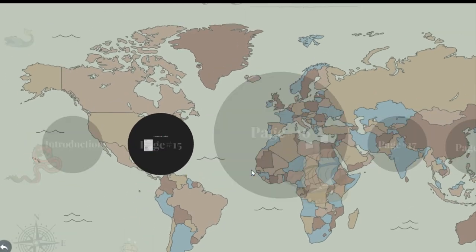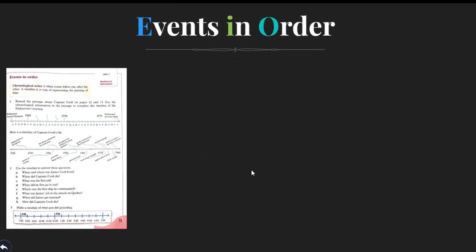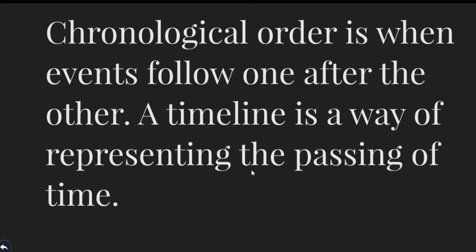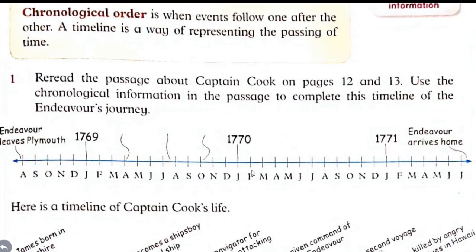Let's move to the next page, and that is events in order — chronological order. Chronological order is when events follow one after the other. A timeline is a way of representing the passing of time. Chronological order is a method of organization in which events are presented as they occurred in time. Here you can see the timeline starting from 1769 and ending in 1771, and here the alphabets represent the names of months like August, September, October, November, and so on.